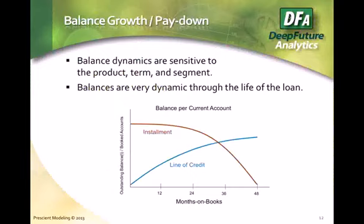For balance growth or pay down, the key point is that these things change with time, so we need a model. We need a model that says what is the pattern of pay-down of principal for installment loans or growth of balance for lines of credit. For installment loans like auto and mortgage, there's not too much surprise — but lines of credit are more of a challenge. How does balance growth depend on the credit line assigned? Up to a certain credit line, people will utilize all you give them; beyond a certain point, they won't. In general, balance growth is not very sensitive to the economy — it's mostly a life cycle effect.